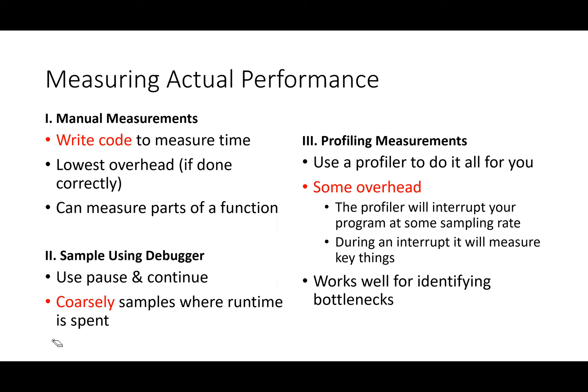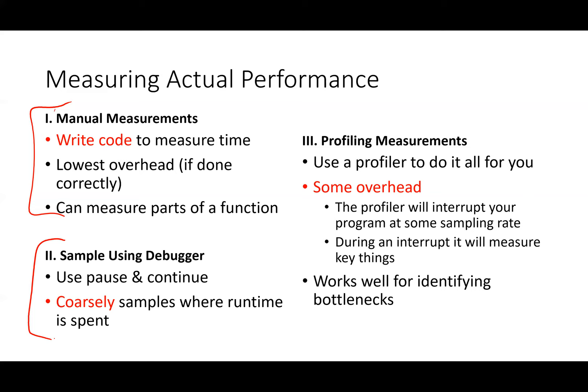So how are we going to measure it? I'm going to show you three ways. The first is manual measurements — not with your stopwatch, so a bit better than that. You can write code to measure time, and it has the lowest overhead, so the extra code runs really fast and doesn't slow down what you're measuring much. Adding in manual measurements is like the least disruptive — it's kind of like the Heisenberg uncertainty principle for programs. It can also measure not just an entire function; you can put timers around individual loops within a function.